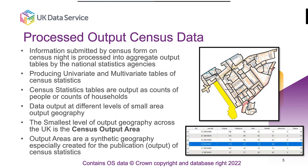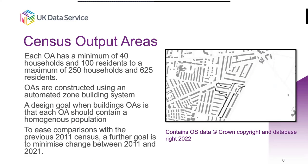Output areas are a synthetic geography created purely for the publication of census statistics. They are built using a zone building system. Each output area has a minimum of 40 households and 100 residents, up to a maximum of 250 households and 625 residents. A design goal is to ensure the population within each output area is homogeneous — comparing like for like. A secondary goal is to minimise the amount of change between 2021 and 2011 output areas, so it's easier to make comparisons across censuses. Output areas typically cover a street or a few streets together.